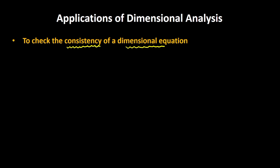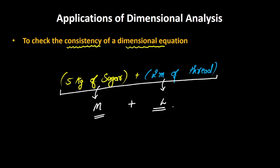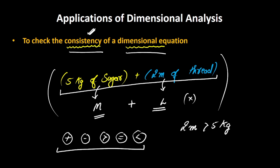Let's understand what we mean by checking the consistency of a dimensional equation. In the easiest terms, let's say you go to the market and ask the shopkeeper: give me 5 kilograms of sugar plus give me 2 meters of thread. Can you add these two things together? Kilogram is the unit of mass and meter is the unit of length — you can't add mass with length. So these two things are not consistent with each other. You can't add them, you can't subtract them. Operations like addition, subtraction, greater than, equal to, less than cannot be applied to physical quantities that are inconsistent. For example, I can't say 2 meters is greater than 5 kilograms.